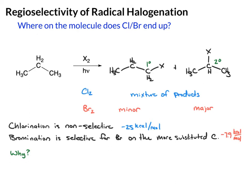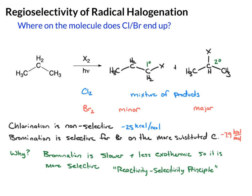This leads us to what's known as the reactivity-selectivity principle. Something that is more reactive — i.e., the chlorination — is going to be less selective. Something that is less reactive — the bromination — will be more selective. So the bromination is slower and it's less exothermic, making it more selective.